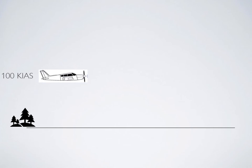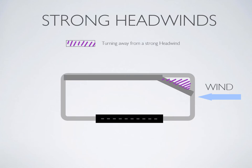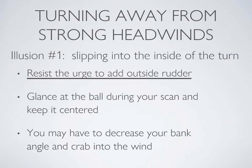First, let's look at what could arise from turning away from a strong headwind — specifically, slipping to the inside of a turn. As you turn away from a strong headwind, you're going to get yourself into a situation where you have a tailwind, and it's going to look like you're slipping to the inside of the turn.